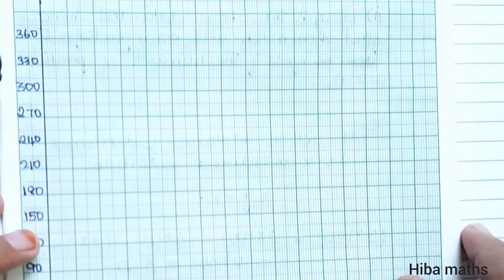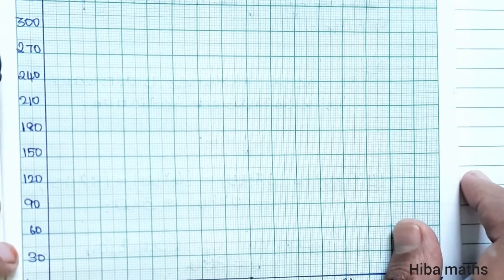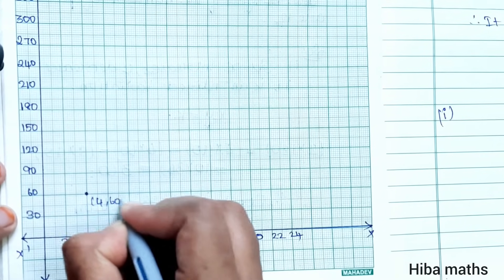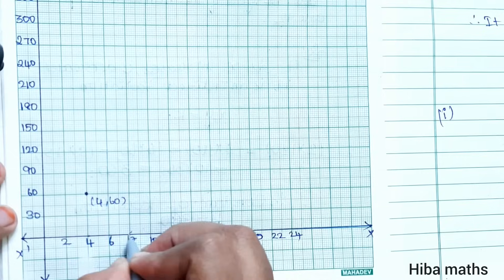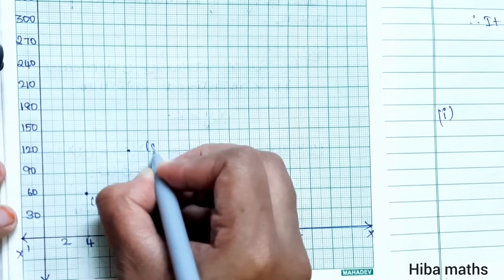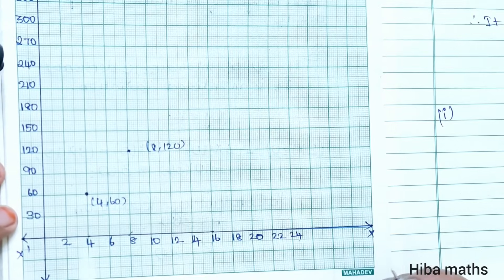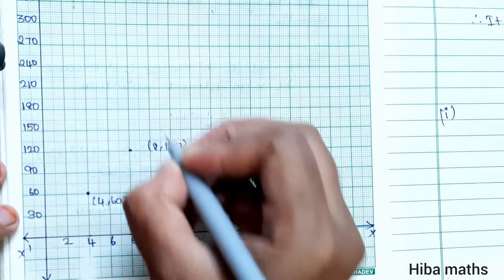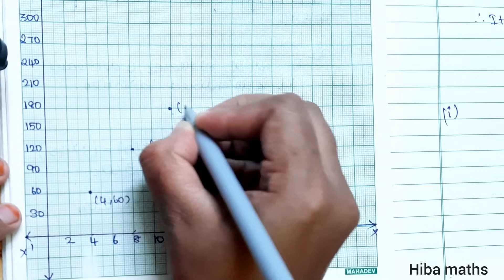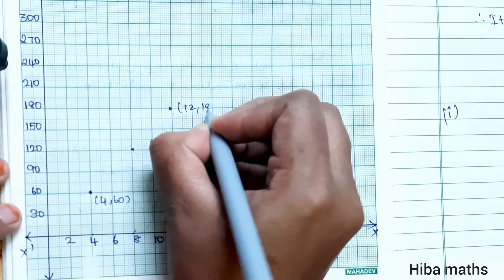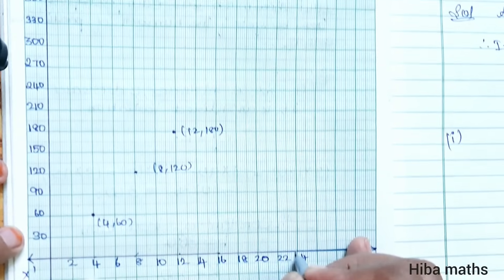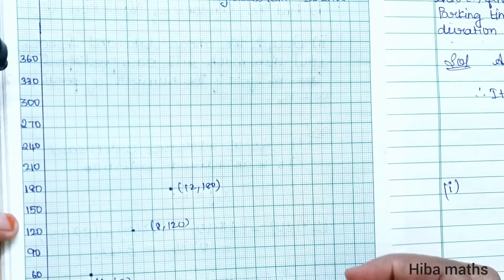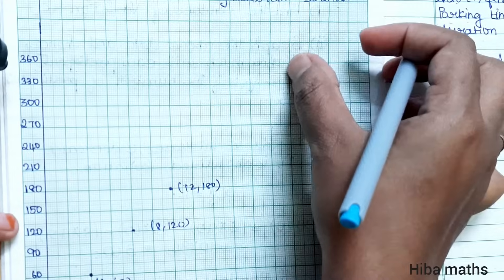We plot the points from the table: first point is (4, 60). Next is (8, 120). Then (12, 180). And finally (24, 360). All four points are marked on the graph.